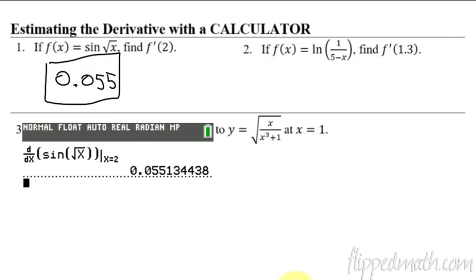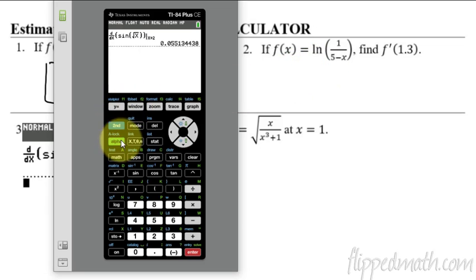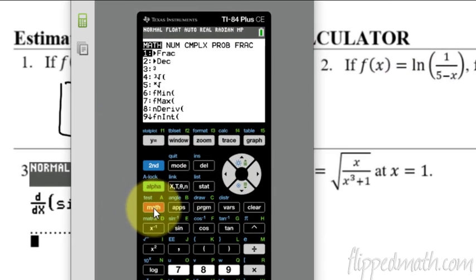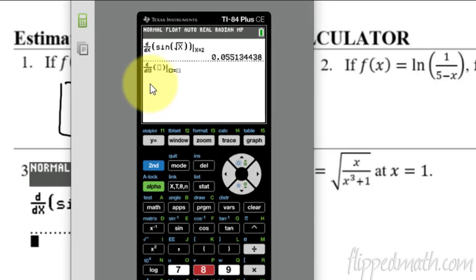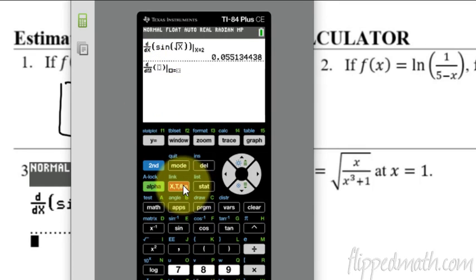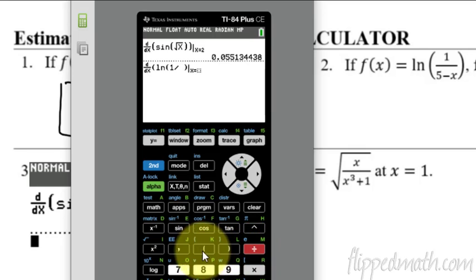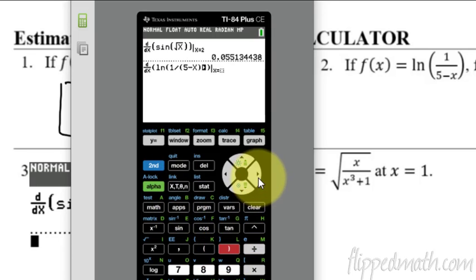All right. So let's do this again real quick. This time, I'm going to do the exact same thing. So math button and then option number eight, I'll just type the number eight and then X derivative with respect to X. Now I'm going to do the natural log of one divided by, make sure I put my entire denominator in parentheses, five minus X. Close my parentheses and there's my entire function.